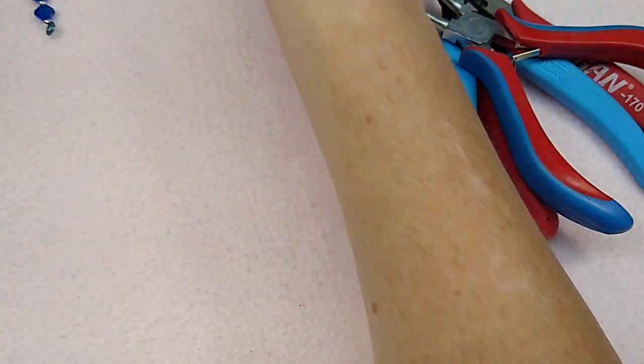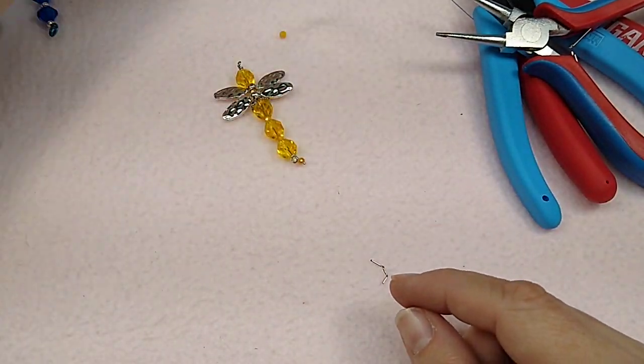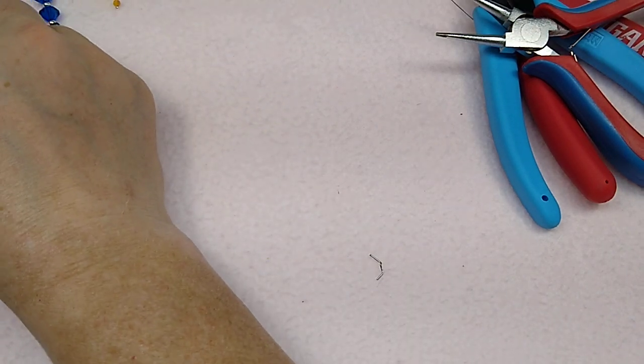So there's another little version of the dragonfly. I'll lay them all out here in a minute so you can see them. And then one more that we're going to do. And this one is a bicone one.